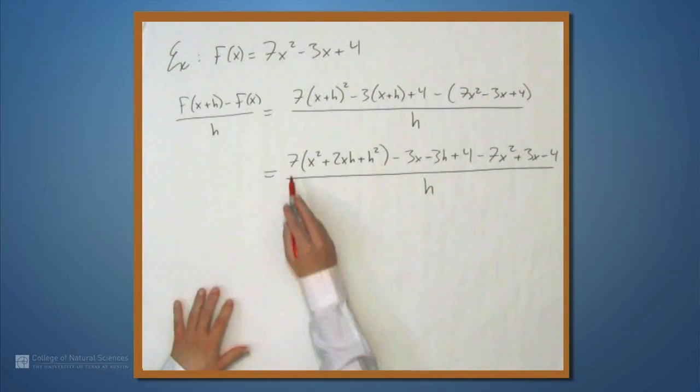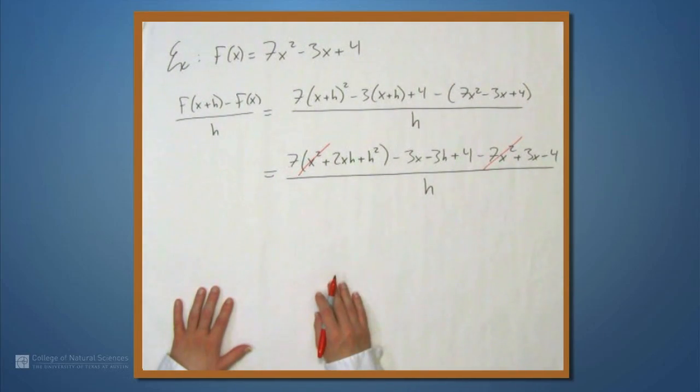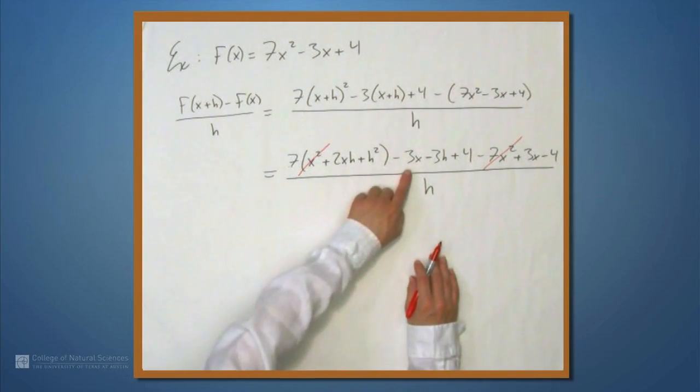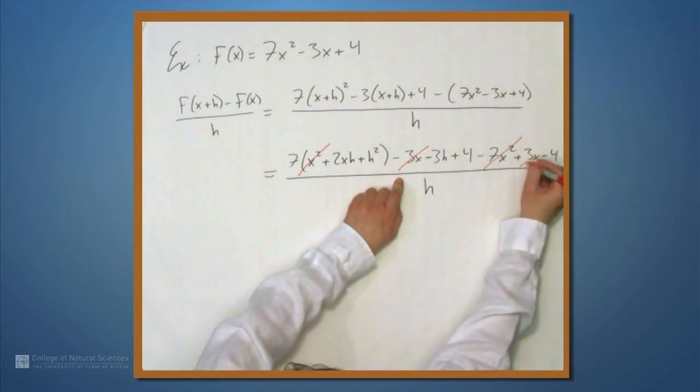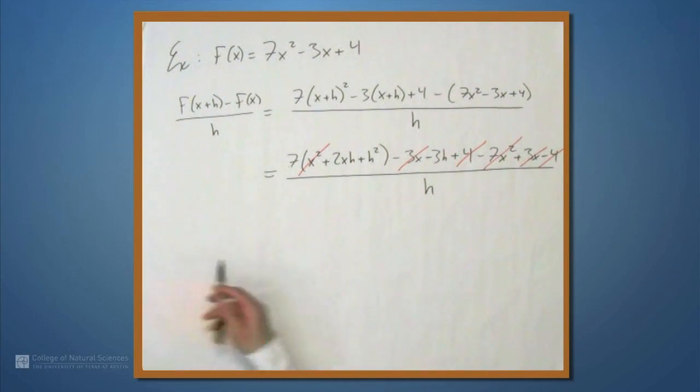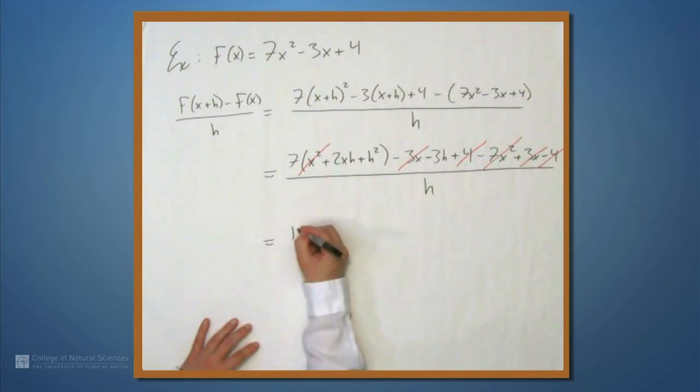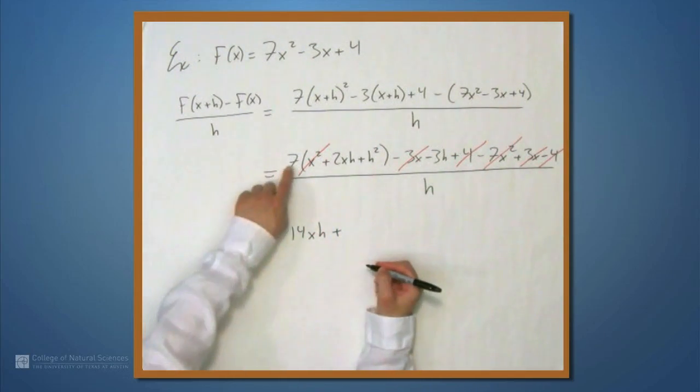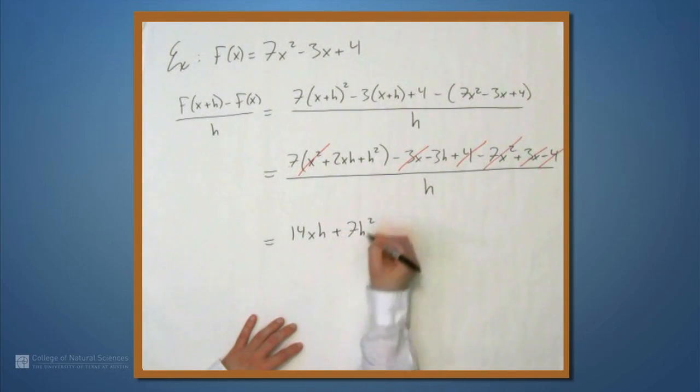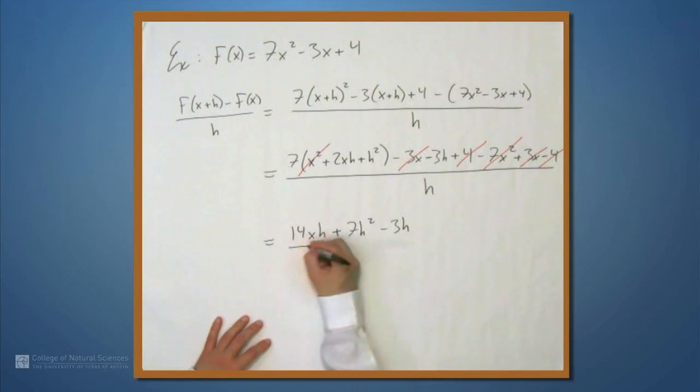Now we can cancel some stuff. We have here a 7x squared and a minus 7x squared, so that goes away. We have a minus 3x and a plus 3x, those go away. We have a plus 4 and a minus 4, so those go away. What we're left with is this 7 times 2xh, so we're left with 14xh plus 7 times h squared minus 3h all over h.